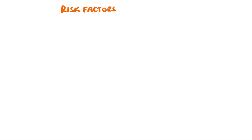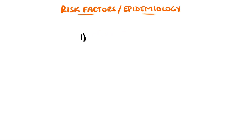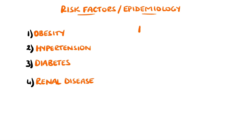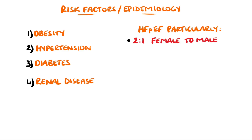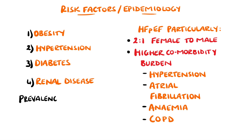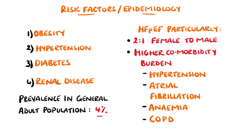Risk factors that are common to both heart failure with a reduced ejection fraction and heart failure with a preserved ejection fraction include obesity, hypertension, diabetes, and renal disease. Heart failure with preserved ejection fraction is seen in more elderly patients and is seen twice as commonly in females than in males. There is usually a higher comorbidity burden as well, including hypertension, atrial fibrillation, anemia, and chronic obstructive pulmonary disease. The prevalence of heart failure in the general adult population is around 4%, with an increasing proportion of heart failure with a preserved ejection fraction.